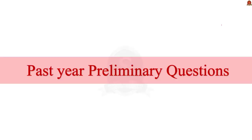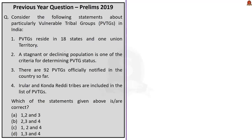Before discussing the articles, let us first solve some past year questions. This first question was asked in Prelims 2019 and is regarding PVTGs — Particularly Vulnerable Tribal Groups. There is a reason I have chosen this question: recently in our daily news analysis we discussed PVTGs in detail, so use this question as revision or practice on that topic.